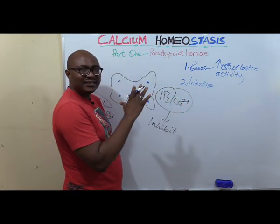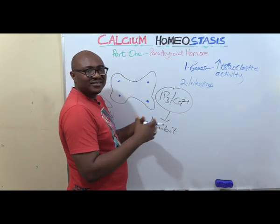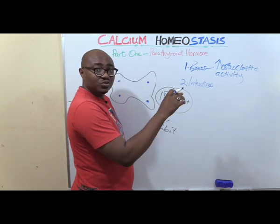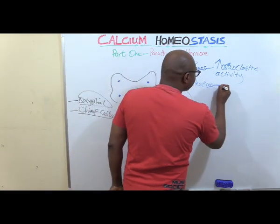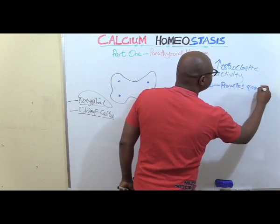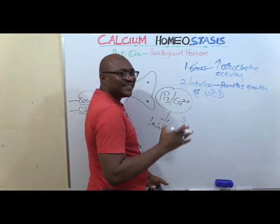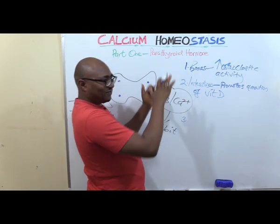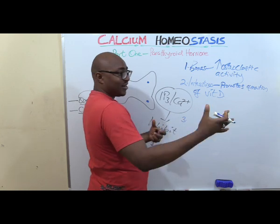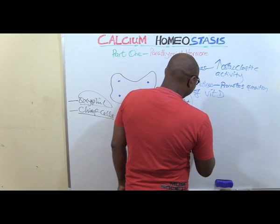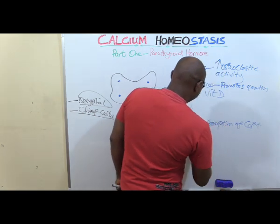For the intestines, PTH acts somewhat indirectly — it promotes the formation of vitamin D, and it is vitamin D that then increases the absorption of calcium in the intestine. Number three, in the kidneys: PTH promotes the reabsorption of calcium. When calcium is filtered in the kidney, PTH promotes more of it to be reabsorbed back into the ECF, increasing calcium levels.